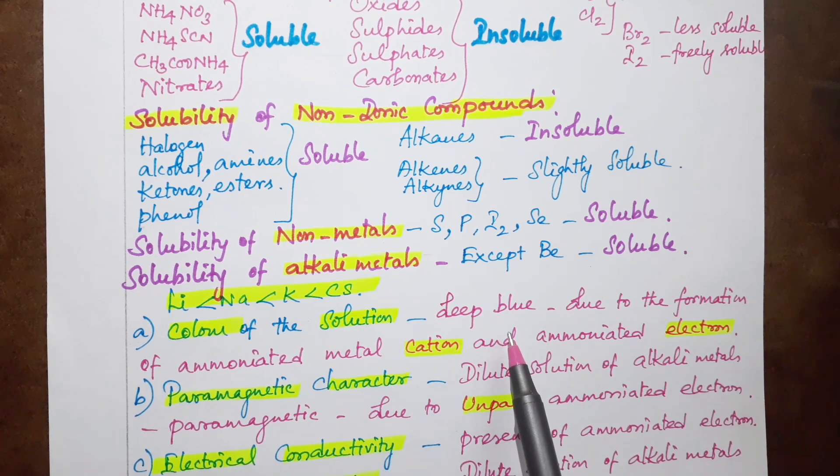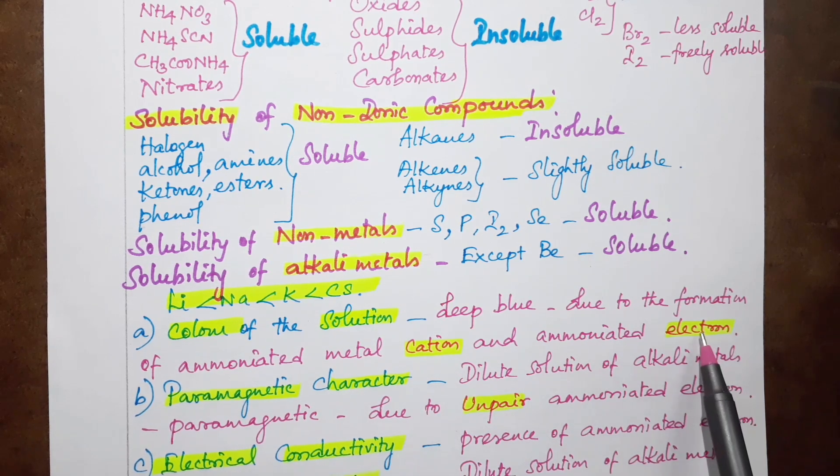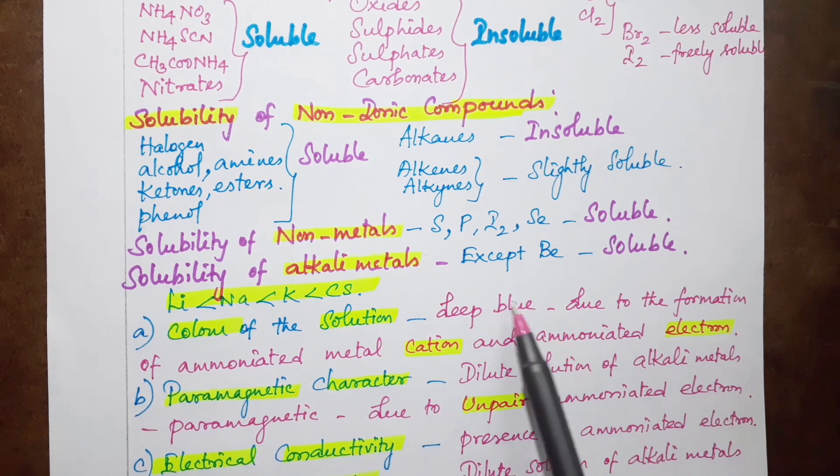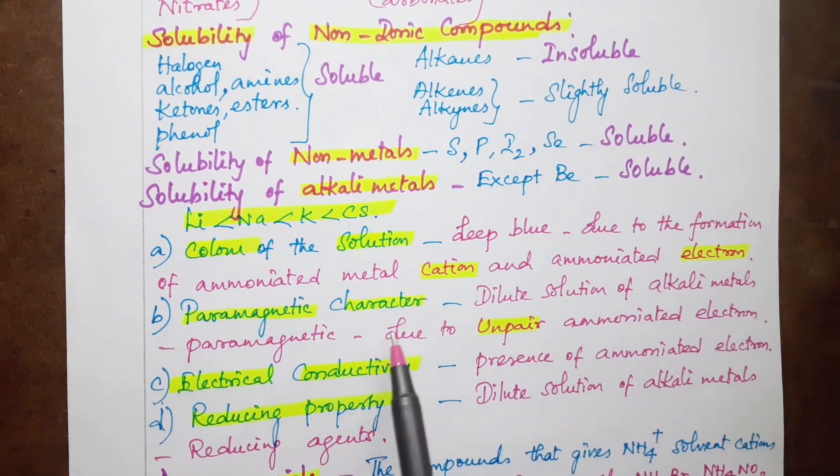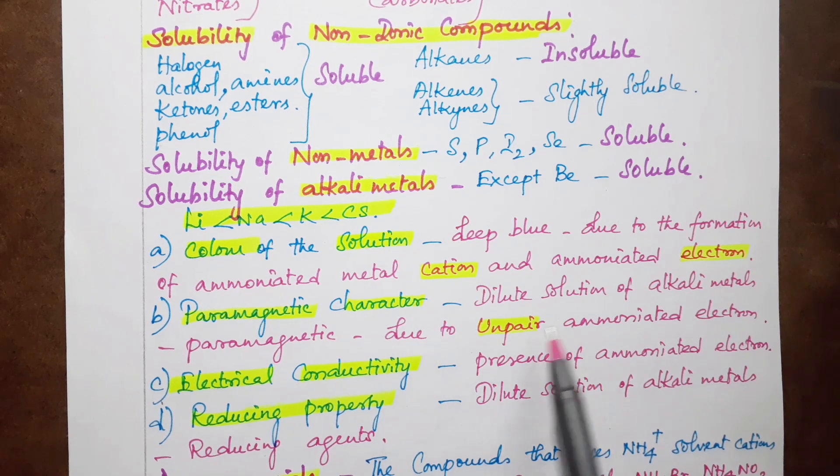This deep blue color is because of the formation of ammoniated metal cation when liquid ammonia reacts with the cation. Alkali metals in dilute solution have paramagnetic nature because of the unpaired ammoniated electron. Electrical conductivity is high because of the ammoniated electron.